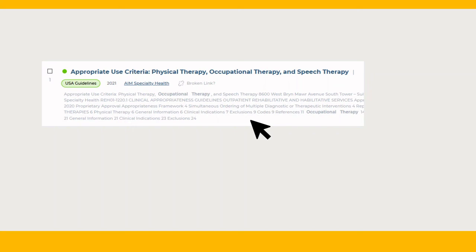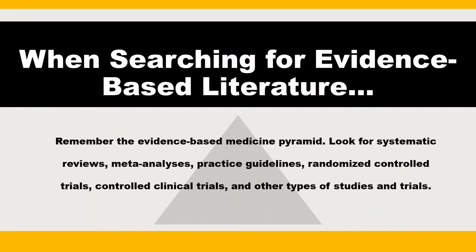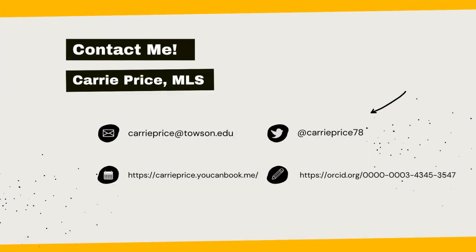In short, when you're looking for evidence-based literature, you'll want to keep an idea of some version of the evidence-based medicine pyramid in mind. That way you'll be able to filter your results for higher levels of research evidence like systematic reviews, meta-analyses, clinical practice guidelines, randomized controlled trials, and more. I hope that you were able to learn something new from this video. Leave a comment down below, and don't forget to subscribe to my channel if you find it helpful. Librarians are here to help, and I would be thrilled to hear from you.